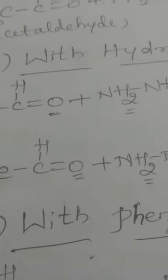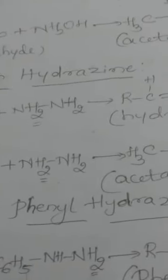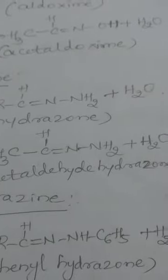Taking acetaldehyde CH₃CHO as an example: acetaldehyde reacts with hydrazine NH₂–NH₂. O and H₂ are eliminated as water, and the product formed is CH₃CH=N–NH₂ plus H₂O — acetaldehyde hydrazone, with water as the byproduct. This is the second condensation reaction.